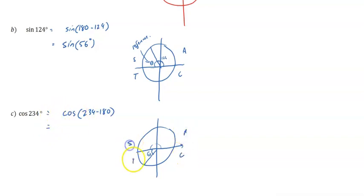C A S T. We're in the third quadrant. Only tan is positive in the third quadrant. So cosine in the third quadrant is going to be negative. And now we have negative cos 54 degrees. This is equivalent to a ratio of cos 54 in the first quadrant, but negative because we're in the third quadrant.